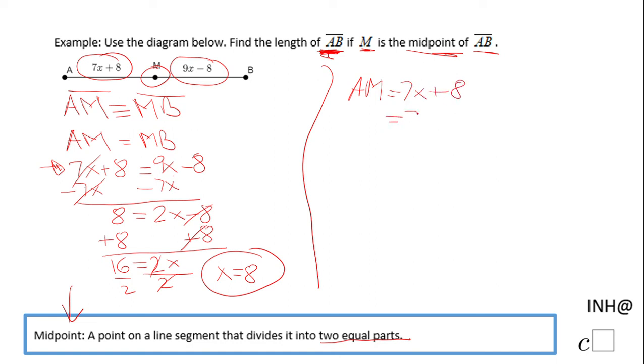And that will be 7 times 8, right? We're going to replace the x with this 8 plus 8. Order of operations here: 7 times 8 is 56 plus 8, that will be 64. That is how much AM is.